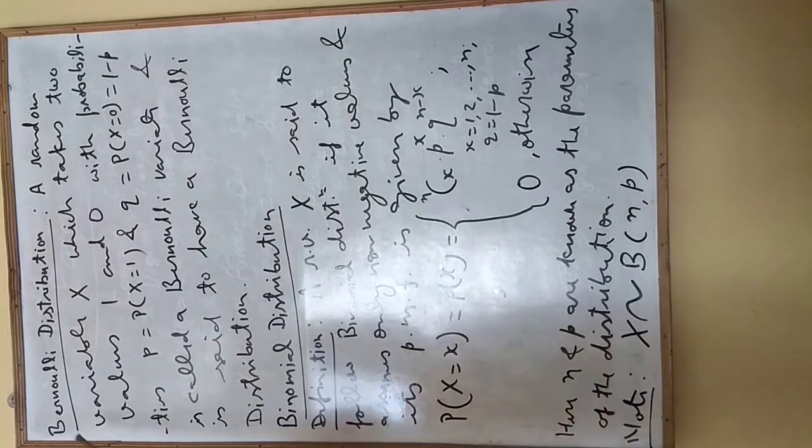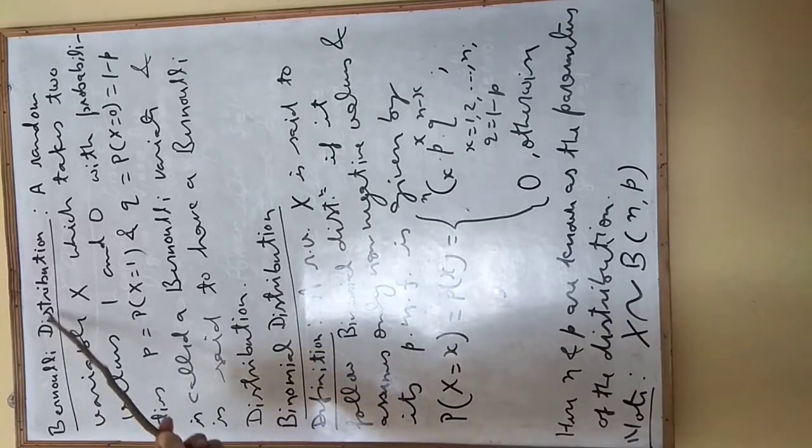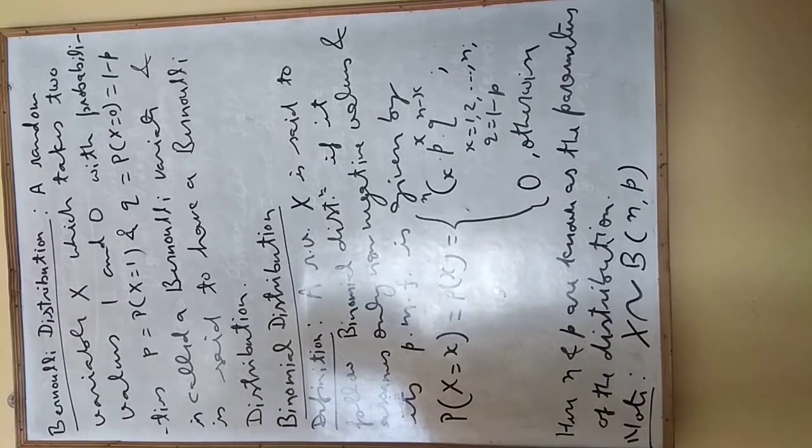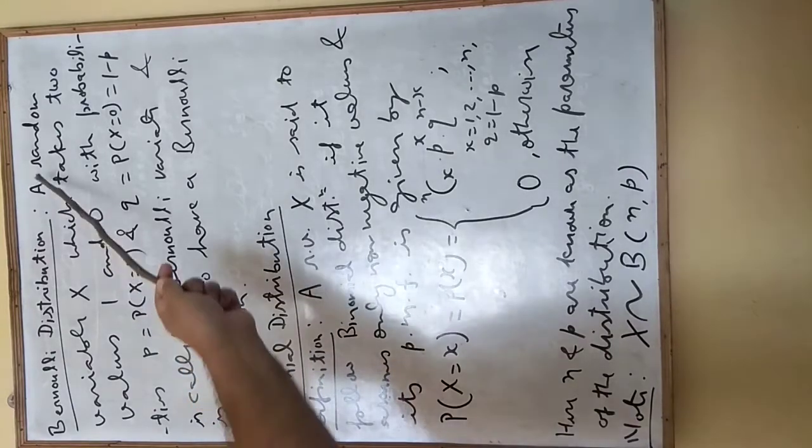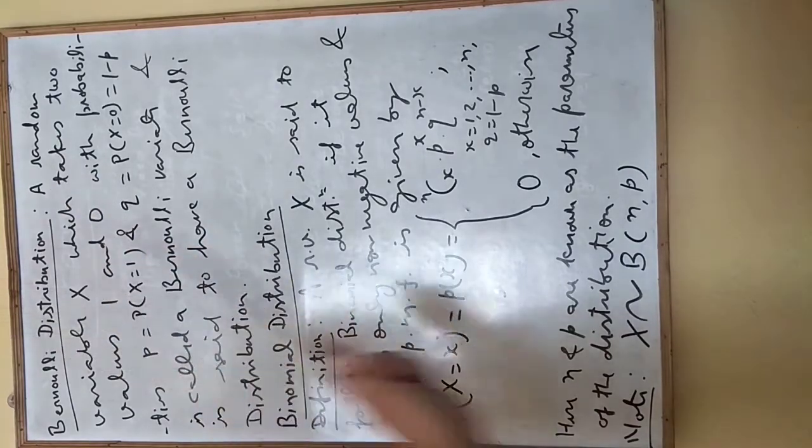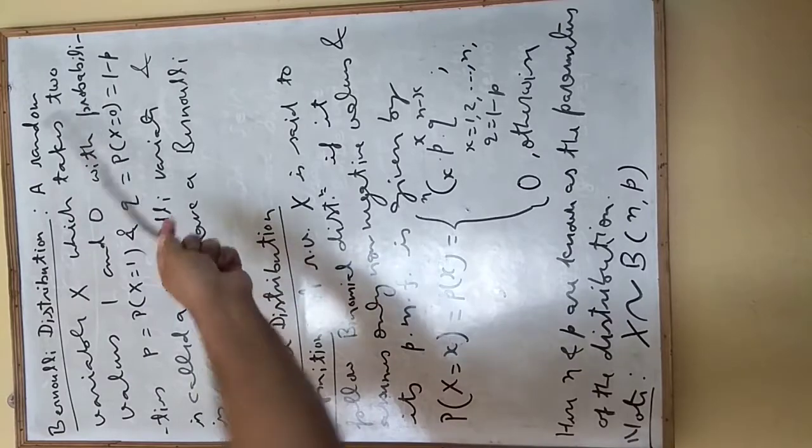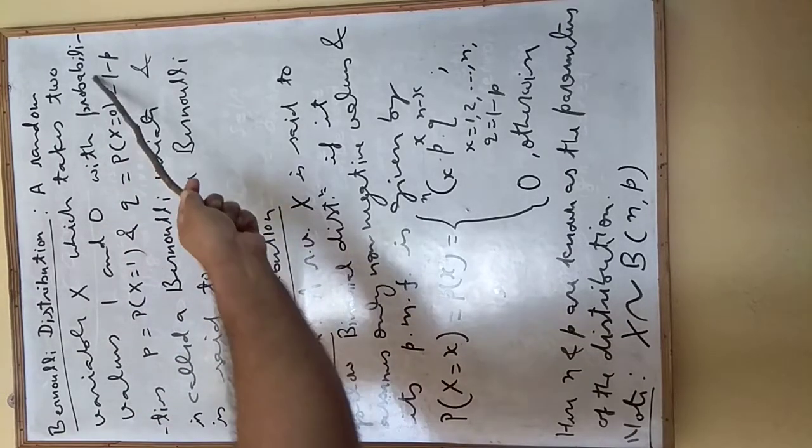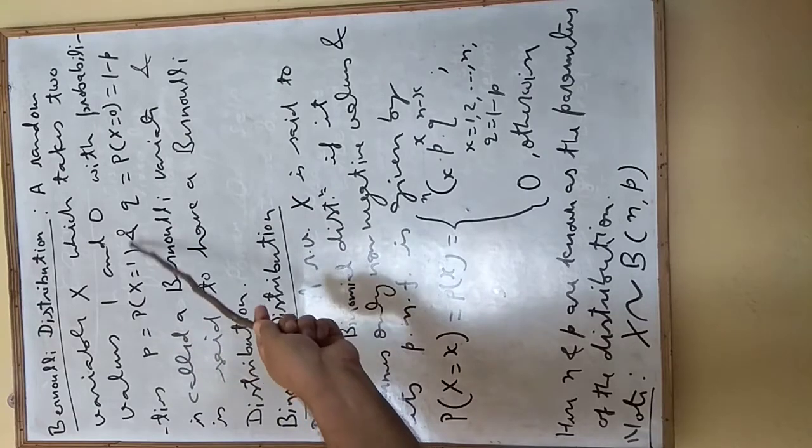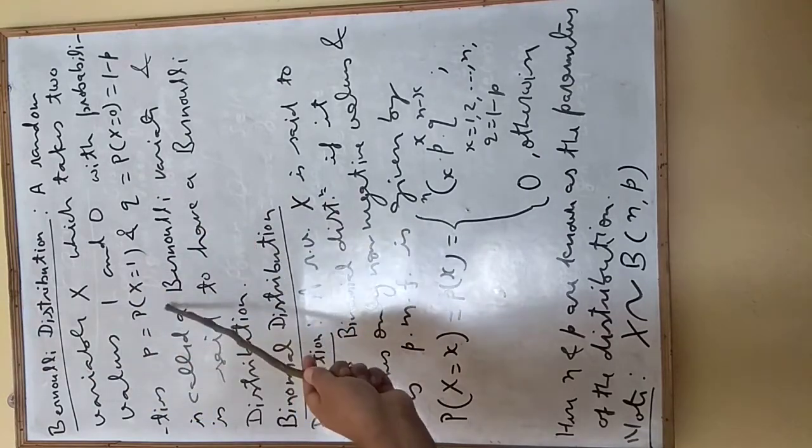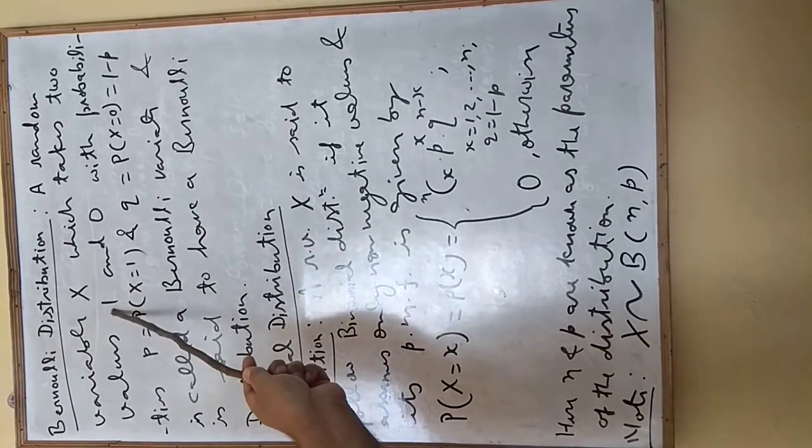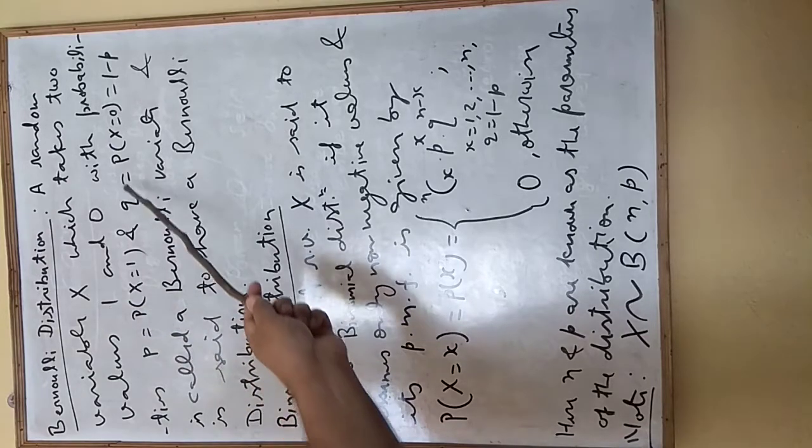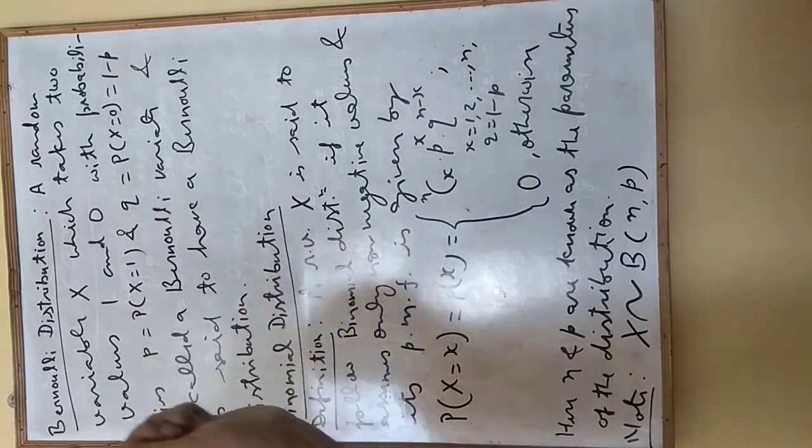Now we will learn what is Bernoulli distribution. Any random variable X which takes two values 1 and 0 with probabilities p and q. This means probability X equals 1 is p, and probability X equals 0 is q.